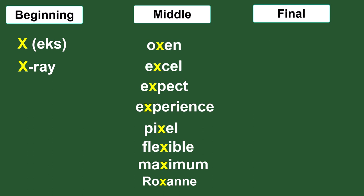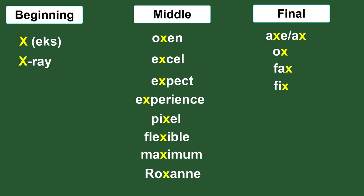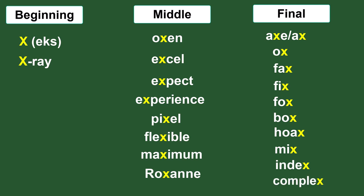Final position: axe — we have the short A sound: axe. Ox — this is the 'ah' sound: ox. Fax, facts. Fix — short 'ih' sound: fix. Box. Hoax — we have the long O sound: hoax. Mix. Index. Complex, or complex.